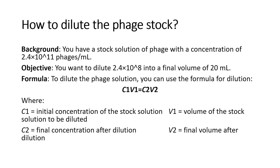Now let's begin the second topic: how to dilute a phage stock. The background is that we have a stock solution of phage with a high concentration of 2.4 × 10¹¹ PFU/ml. Our objective is to reduce the concentration to 2.4 × 10⁸ PFU/ml, and the final volume should be 20 ml.